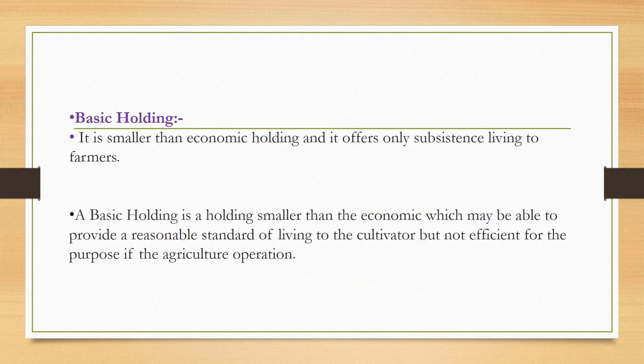The third concept is basic holding. Basic holding generally means the area which is smaller than the economic holding. Basic holding is smaller than economic holding and it offers only subsistence living to the farmer. It does not provide a high standard of living to the farmer but just gives basic subsistence living. Another definition: basic holding is a holding smaller than the economic holding which may provide a reasonable standard of living to the cultivator but is not sufficient for the purpose of agriculture operation.